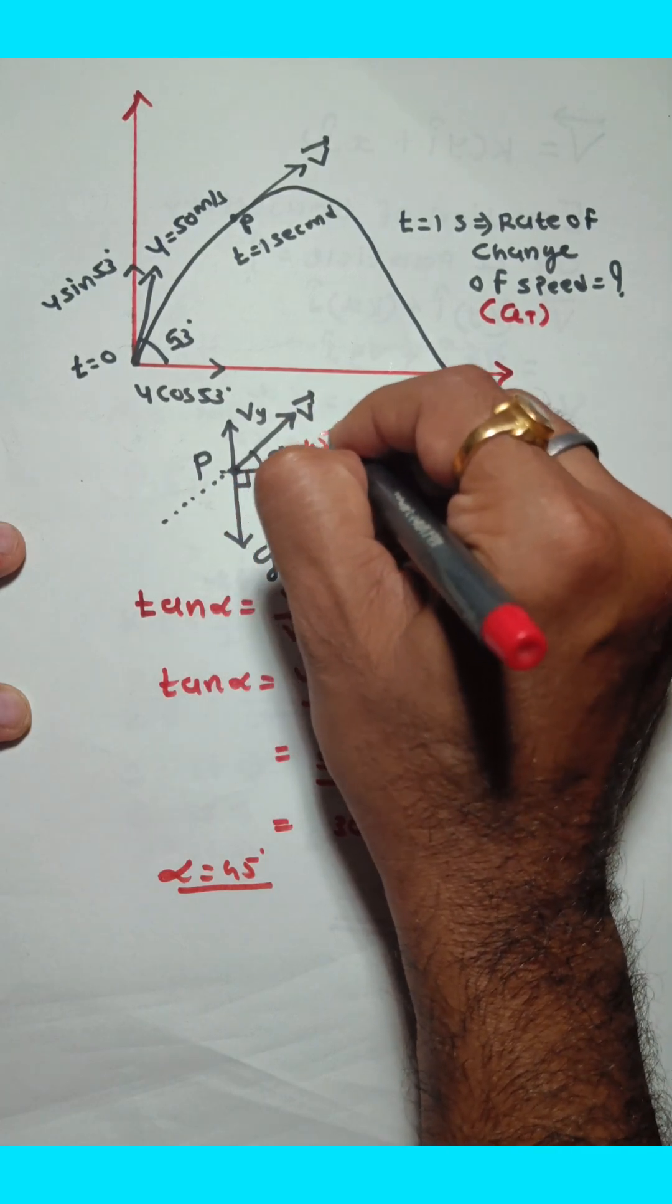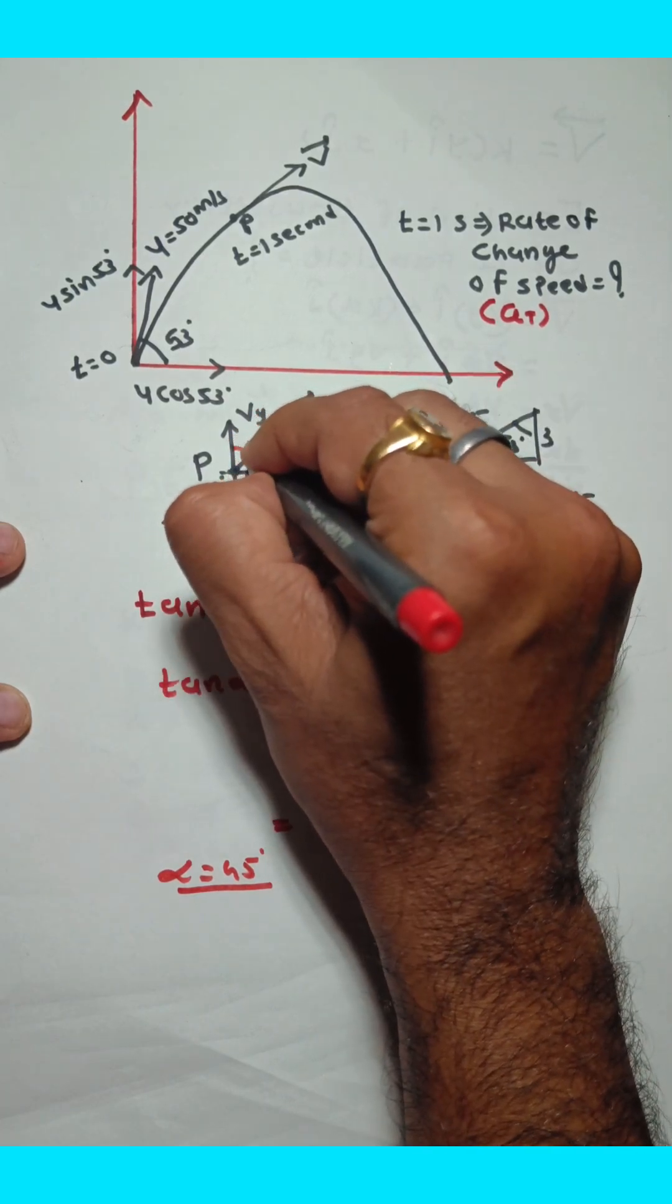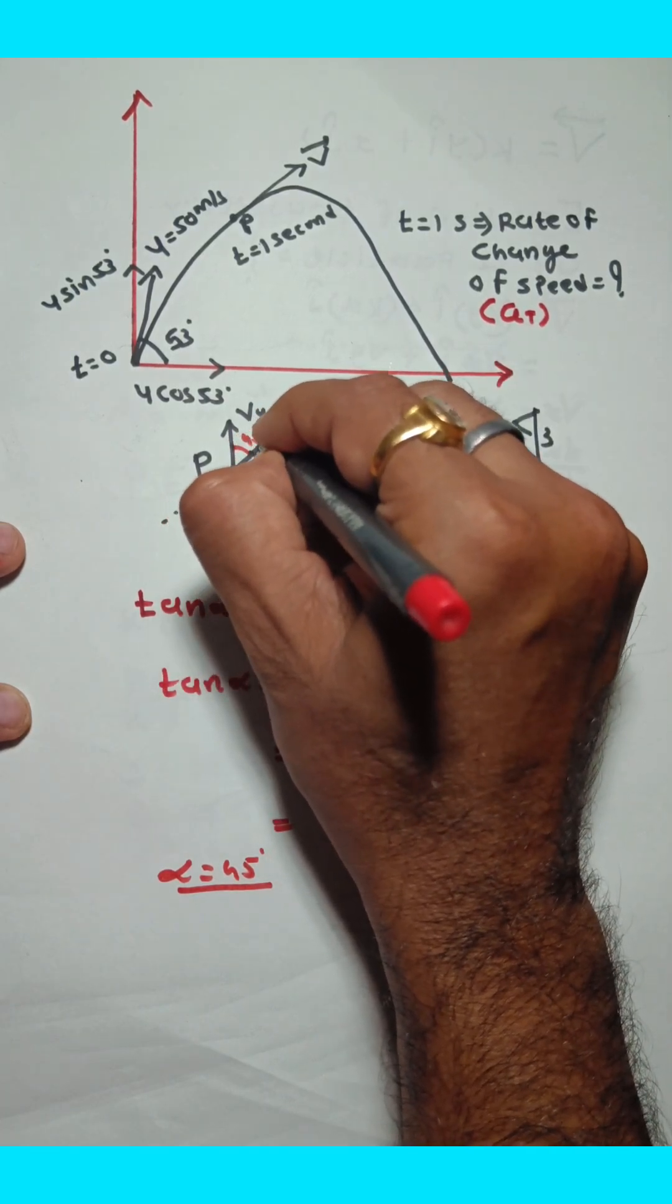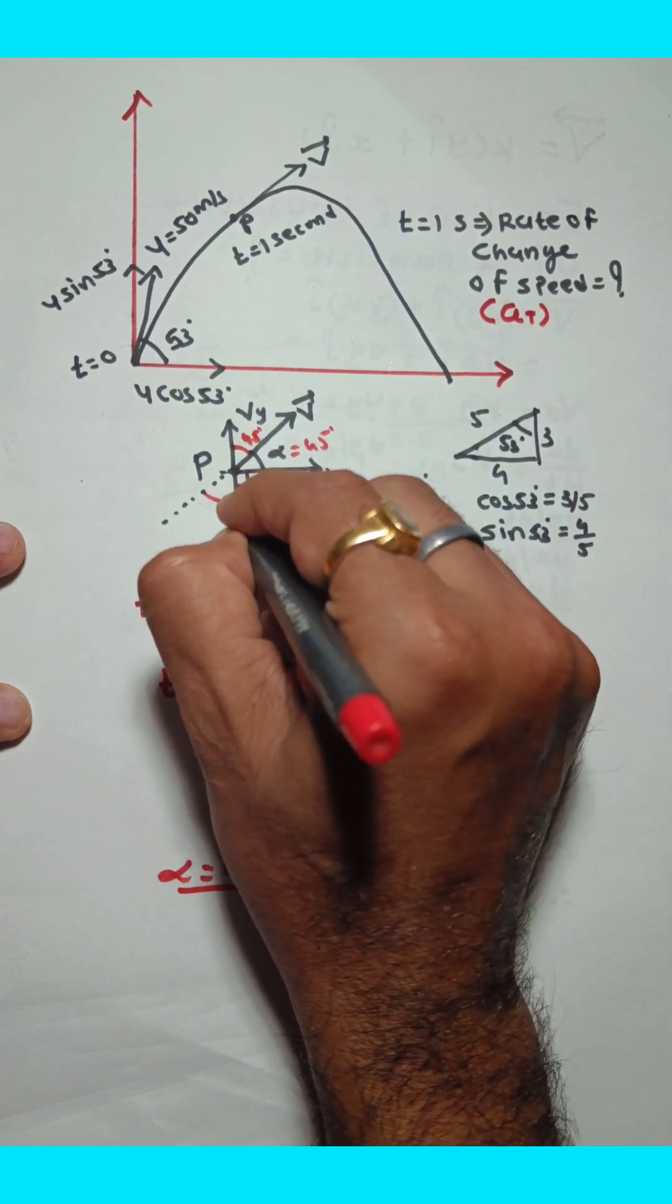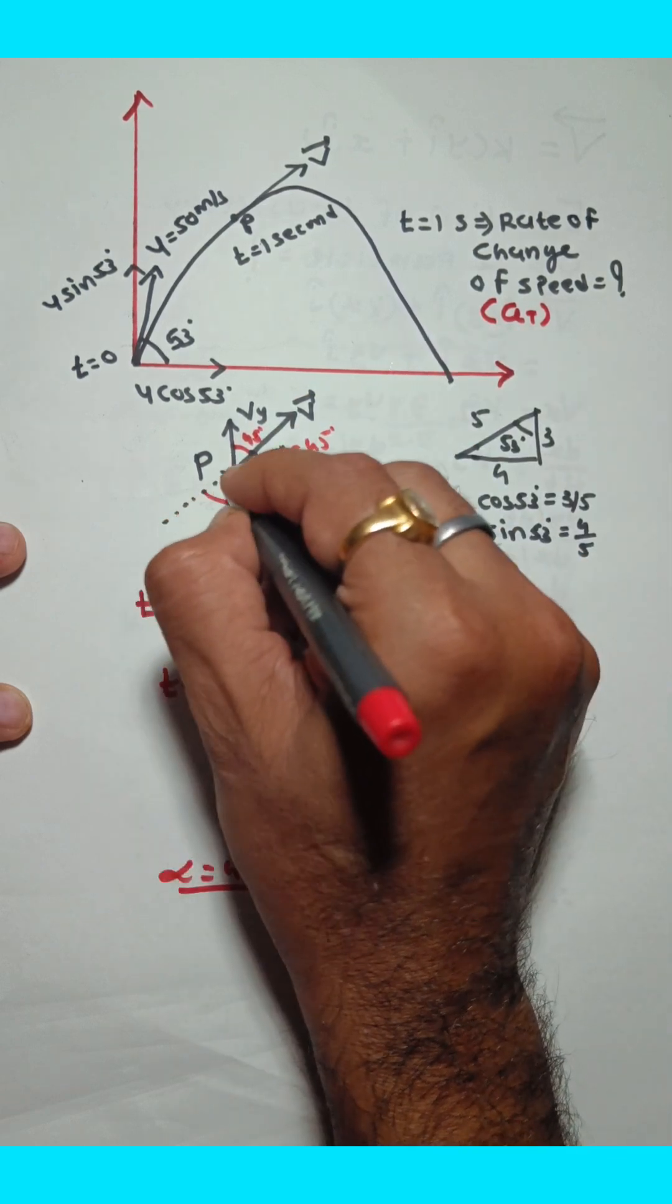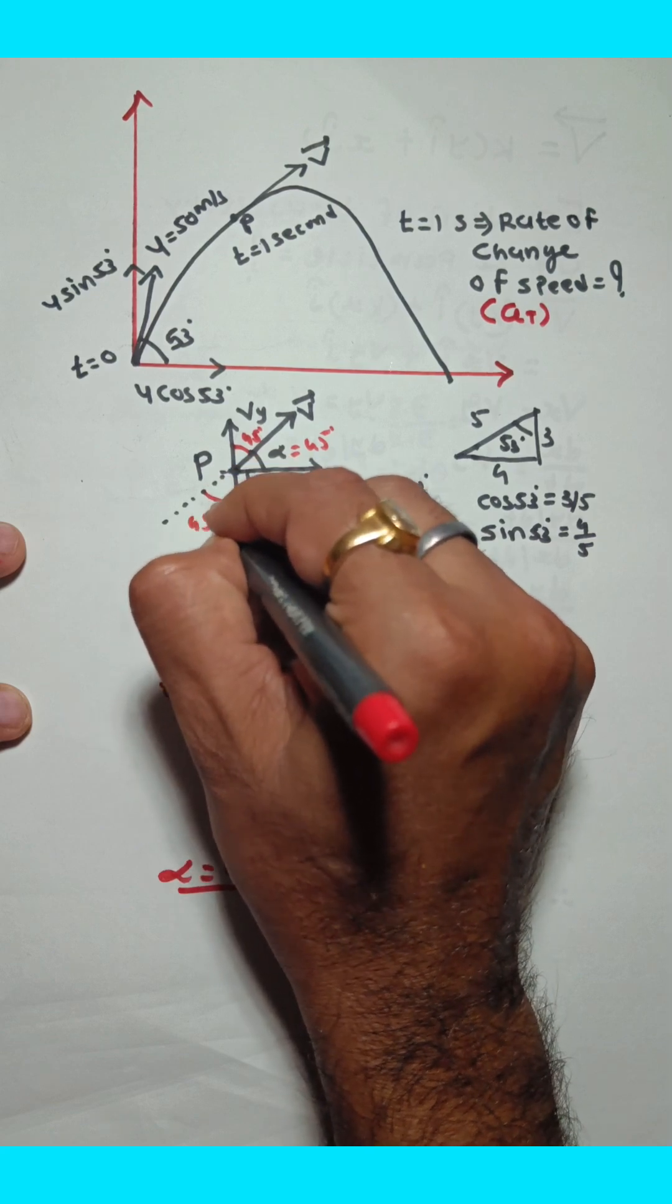If alpha is 45 degrees, then the angle made by v vector with the y-axis is also 45 degrees, as well as the angle made by g with this broken line.